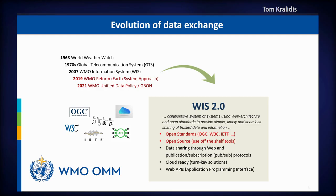In recognition that we needed to be more open with the exchange of data, the first WMO information system was developed around 2007, starting to use web technologies and web methods. Now we're looking at the second version of the WMO information system, using more open standards — OGC and W3C standards — open source software, data sharing through the web, pub-sub methods to advertise data, cloud-ready deployments, and web APIs to provide access to data and services.